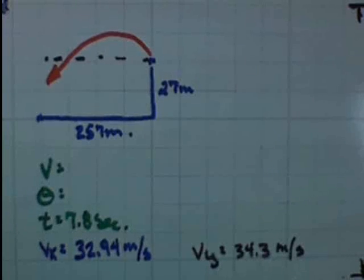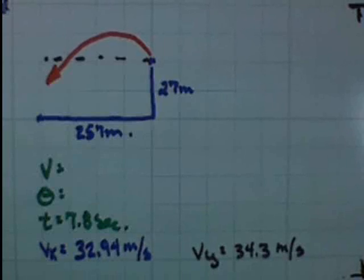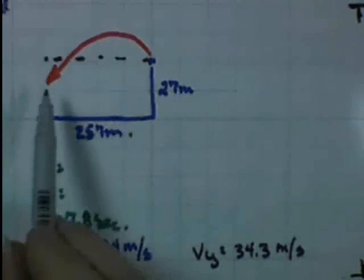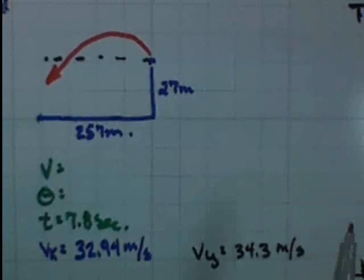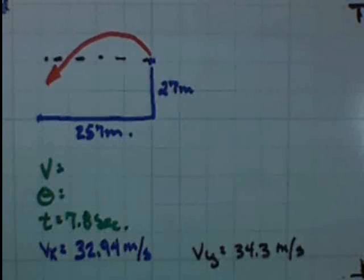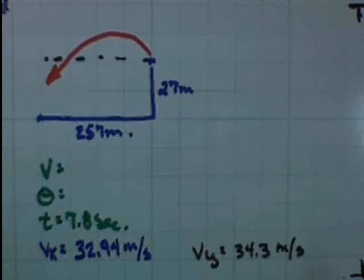Did you get 34.3? No? Did you remember that your distance was negative 27? When you added it, you had to add a negative number — go back and try that. Also, do your math first before you divide by t.